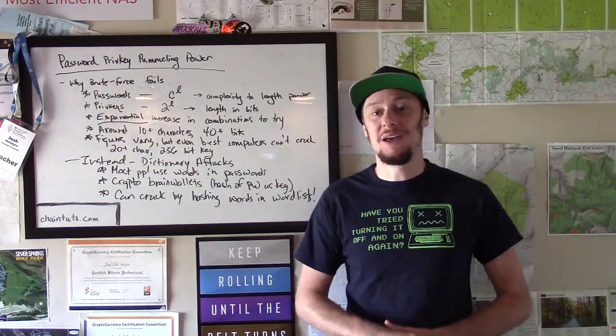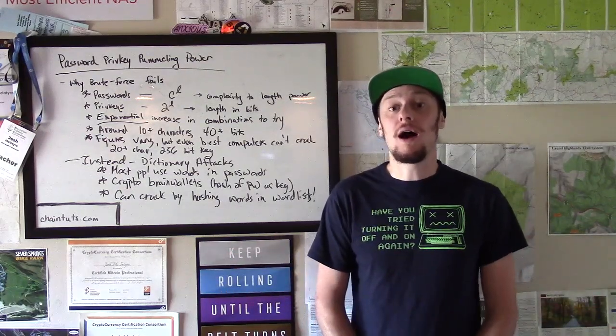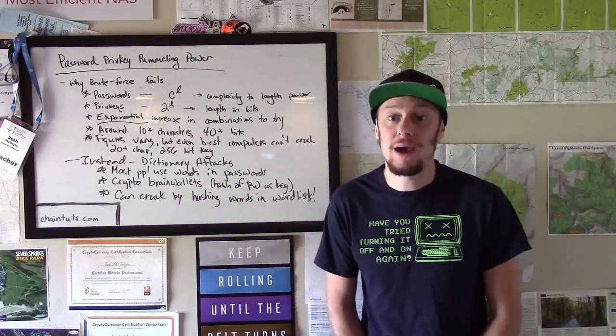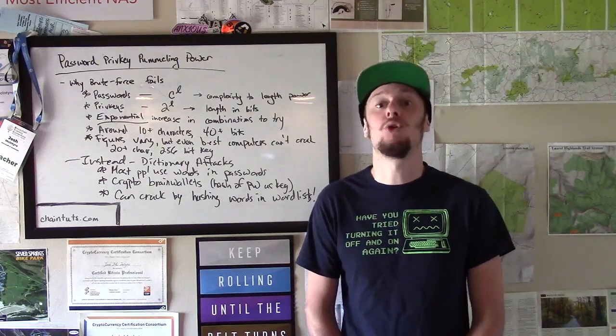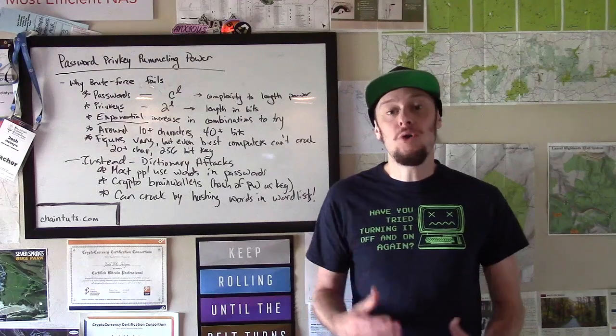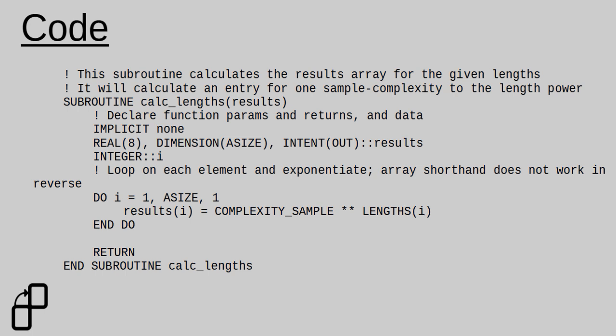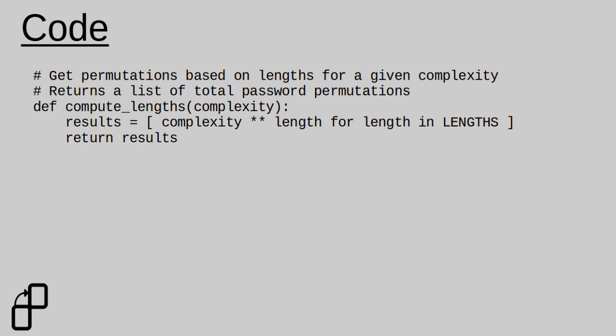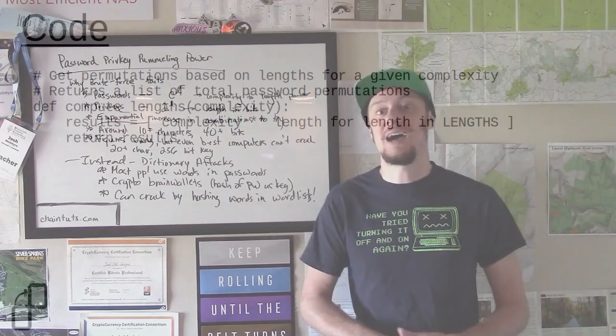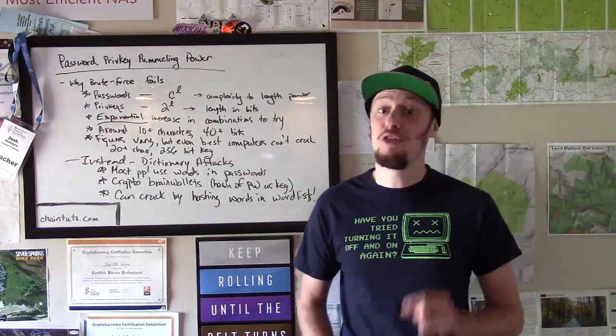Length is fairly self-explanatory — that means how long the password is. In our example, we'll say all eight-character passphrases, or 10, 12, or 20. My code example for this is called passperms. This program takes variable lengths and complexities and computes a table showing all the possible combinations necessary. You can also give it a certain number of operations per second to calculate how long it would take to exhaust that key space, really showing how quickly the cracking time grows as we increase the size of our key space.